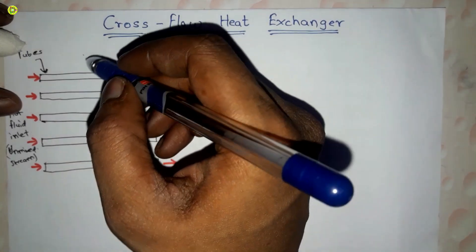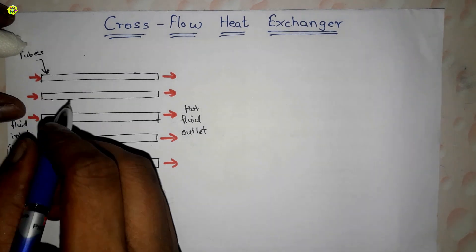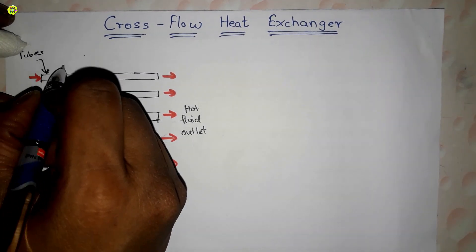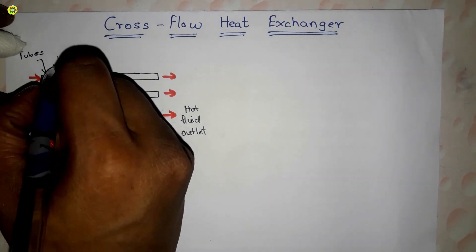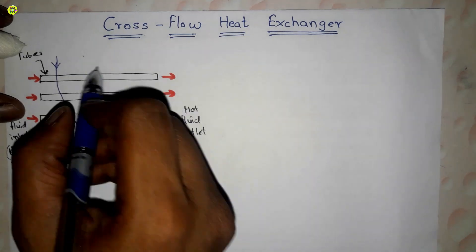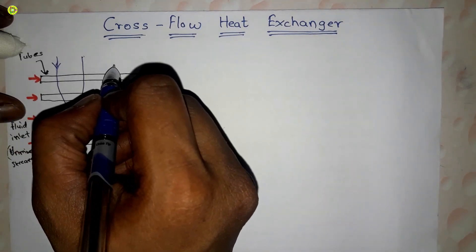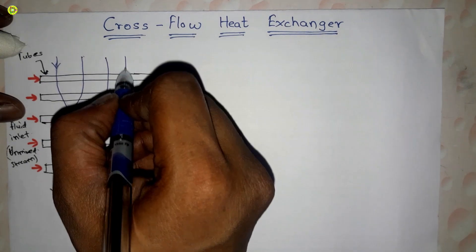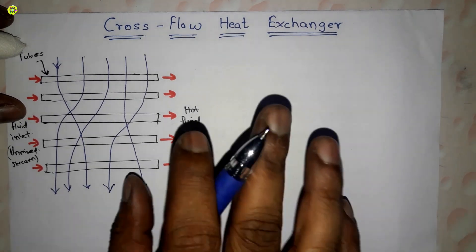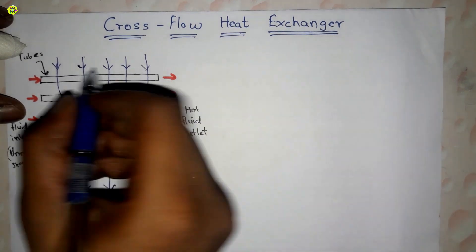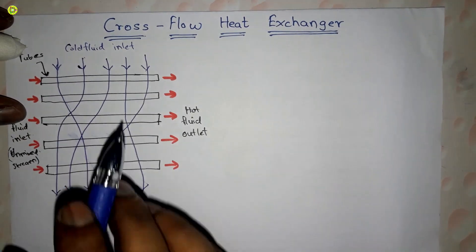Now for the cold fluid, we pass it from above to below — in the vertical direction, as you can see. The cold fluid stream enters here as the inlet and exits as the outlet. Additional streams also flow in this same vertical direction, and so on. This is the cold fluid inlet.